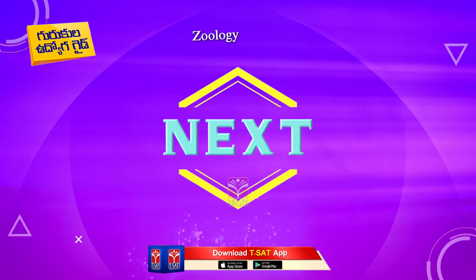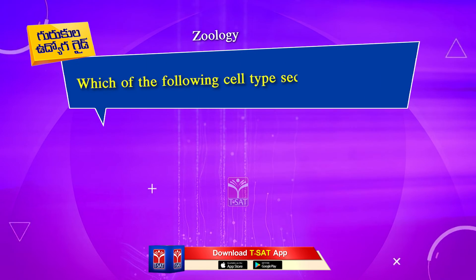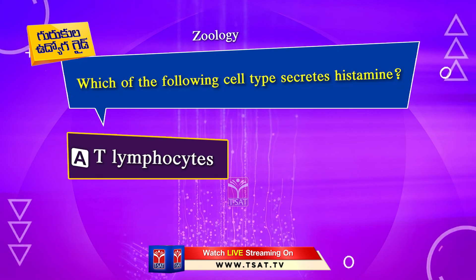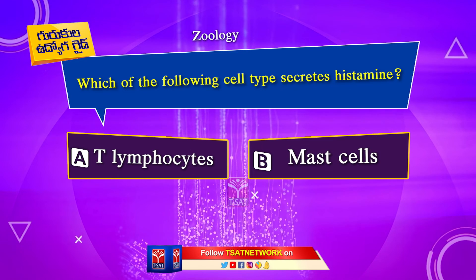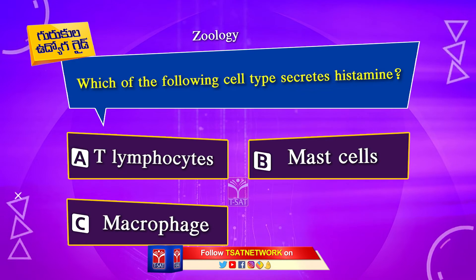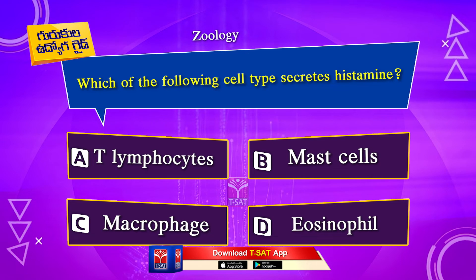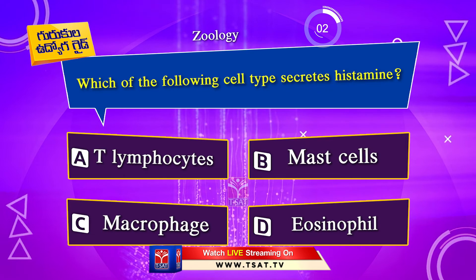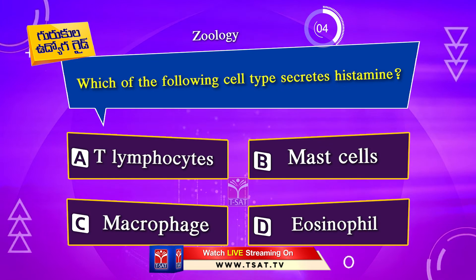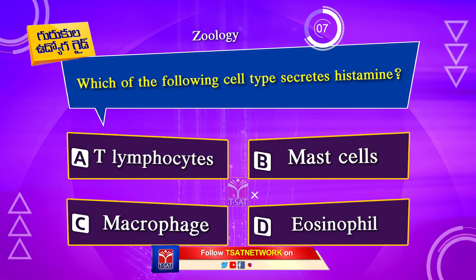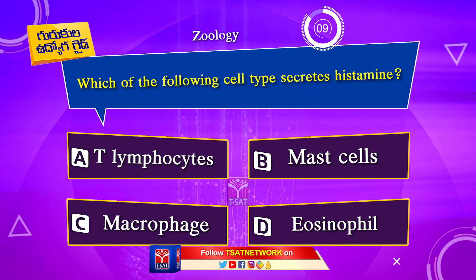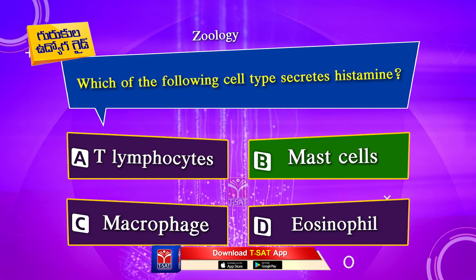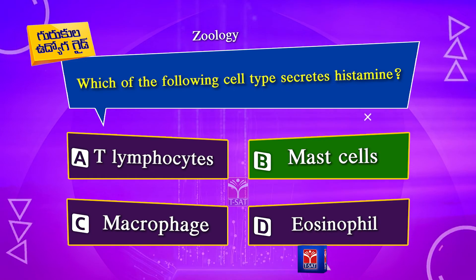Next question. Which of the following cell types secretes histamine? Option A. T lymphocytes. Option B. Mast cells. Option C. Macrophages. Option D. Eosinophils. The correct answer is Option B. Mast cells.